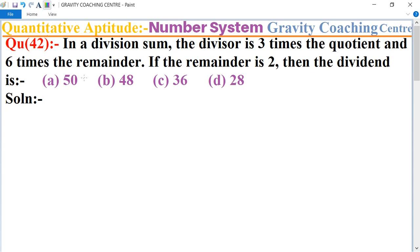In this question, given that the divisor equals 3 times the quotient, means 3Q. And the divisor is also 6 times the remainder, 6 times the remainder.